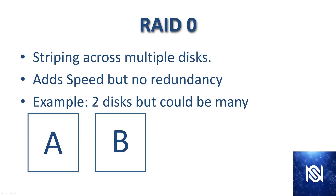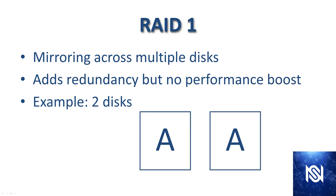RAID 0 utilizes striping but not mirroring — striping across multiple disks. This would add speed but no redundancy. In this example, with two disks, striping would have half of the data on disk A and half on disk B. The data is split across the two disks, which would double the speed of the write operation.